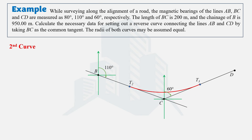For the second curve, the backward tangent is BC and the forward tangent is CD. The bearing of BC is 110 degrees; subtracting 90 degrees (east from true north) gives 20 degrees. The bearing of CD is 60 degrees, and 90 minus 60 gives 30 degrees. So the deflection angle Δ2 is 30 plus 20, which equals 50 degrees.